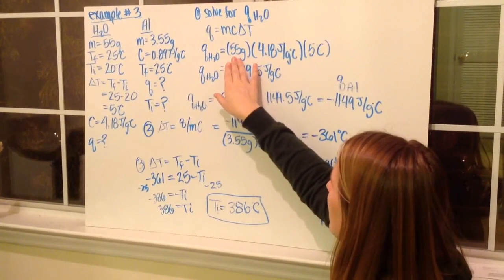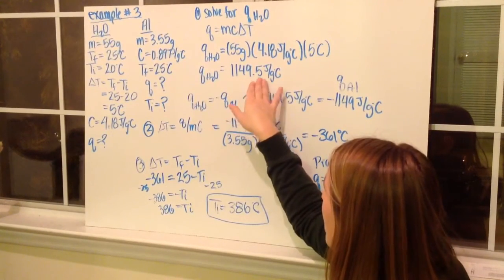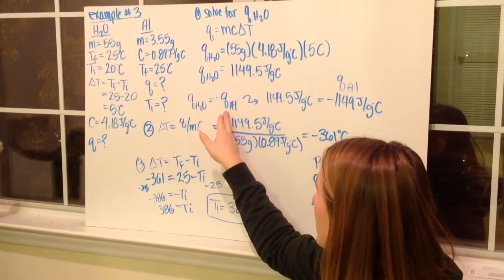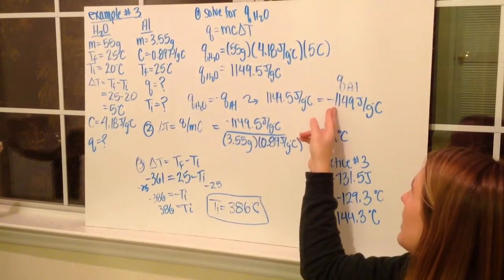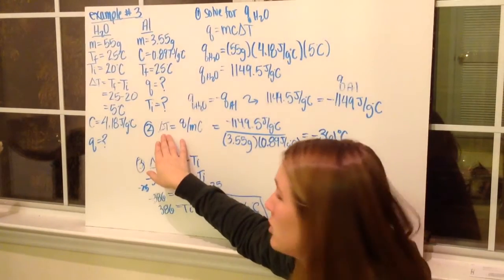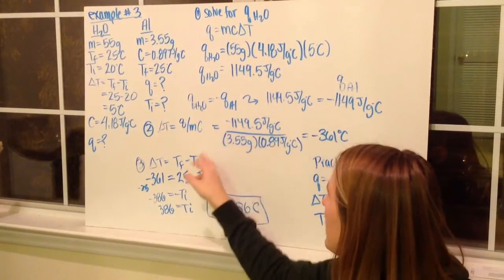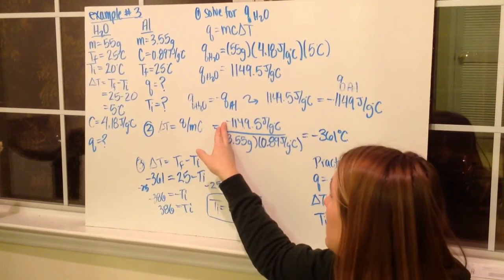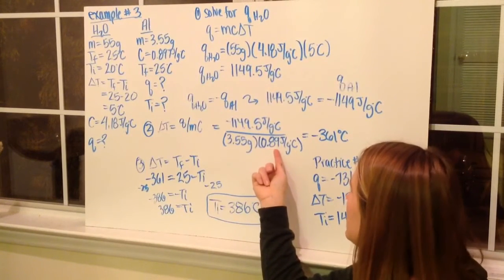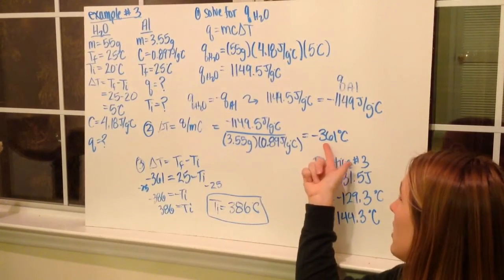Q equals MC delta T. Plugging in mass, specific heat, and change in temperature, I get Q of water = 1,149.5 joules. Using the first law of thermodynamics, Q of water is equal to the opposite of Q of aluminum. Therefore Q of aluminum = negative 1,149.5 joules. Now solving for aluminum's change in temperature: delta T equals Q divided by (M times C). Plugging in Q = negative 1,149.5 joules, M = 3.55 grams, and C = 0.897 joules per gram degrees Celsius. This gives a delta T of negative 361 degrees Celsius.